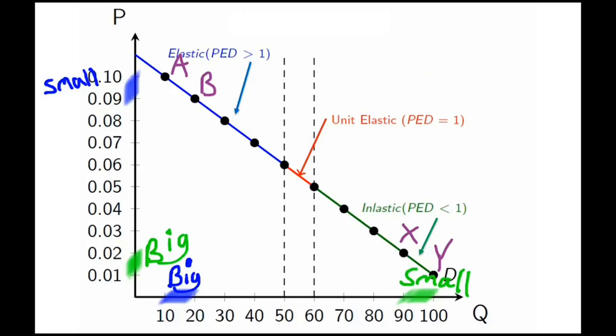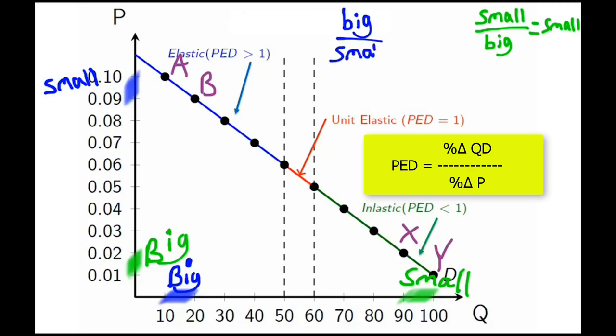Now let's take that and put it back into our elasticity formula. Going from x to y, we get small number divided by big number, and that'll give you a small number. Between points A and B in the upper left, what you end up with is a big number divided by a small number, which will give you a big number. Big, bigger than one. Small, smaller than one. And that's why this works.